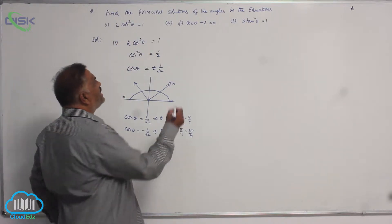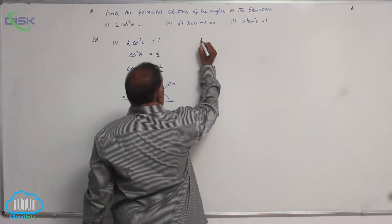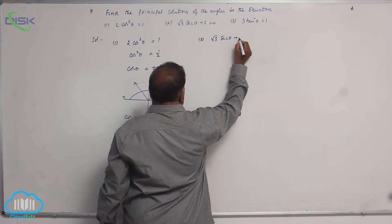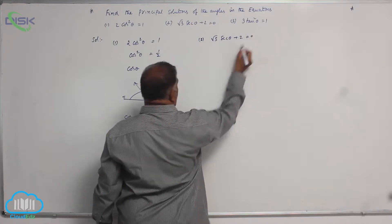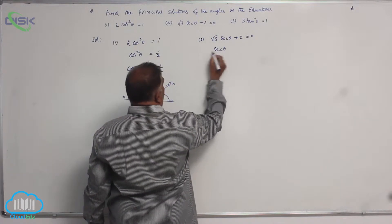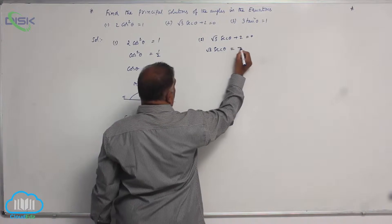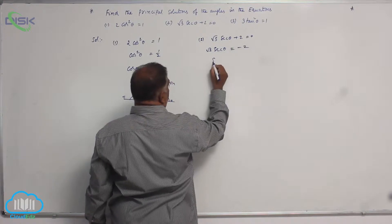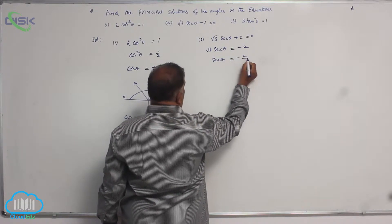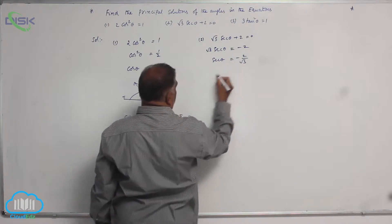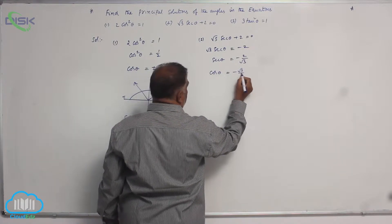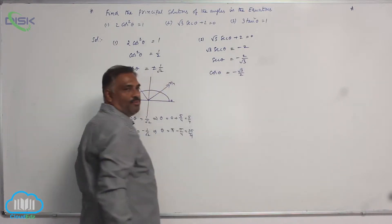Coming to the second question: root 3 secant theta plus 2 is equal to 0. So secant theta times root 3 equals minus 2, which gives secant theta equal to minus 2 by root 3, or equivalently cos theta equal to minus root 3 by 2.